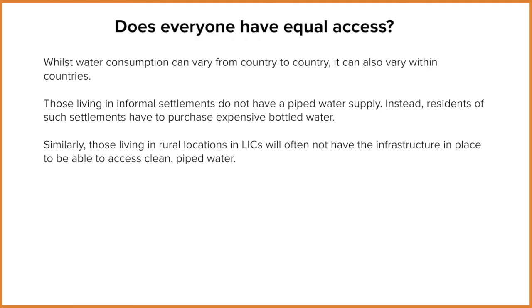Does everyone have equal access to water? We can firmly say that no, people don't. There are a few patterns that persist throughout the world. While water consumption can vary from country to country, it also varies within countries. If you live in a rural area, particularly in LICs, your water access is going to be reduced. That's because the infrastructure is more costly to put in place, and if there aren't as many people living out there, the infrastructure probably won't be developed. So urban areas tend to have piped water supplies, whereas rural areas don't, meaning people must rely on natural water sources which may have been polluted.